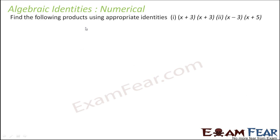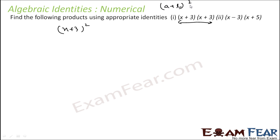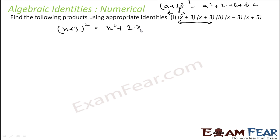Now we'll solve some questions using algebraic identities. We have to find the following products. (x+3)(x+3) = (x+3)² — this matches the identity (a+b)² = a² + 2ab + b², where a=x and b=3. So this becomes x² + 2×x×3 + 3².